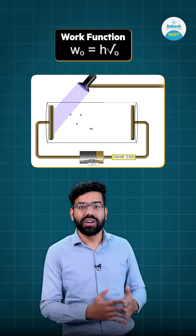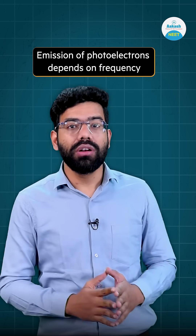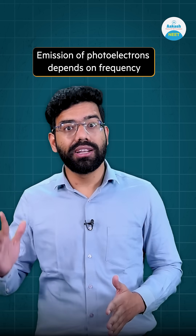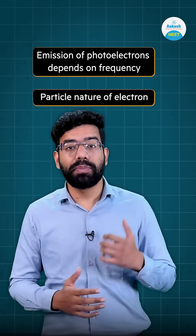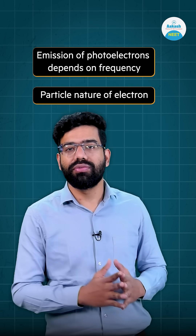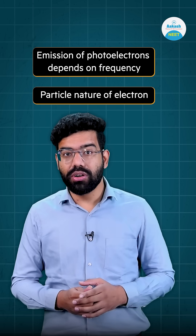To emit an electron from a metal surface, the photon must overcome an energy barrier known as the work function of that material. Because of this energy barrier, the emission of photoelectrons depends on the frequency of photons, not intensity. This dependency on frequency explains the particle nature of light.